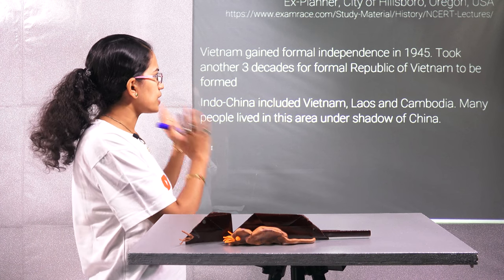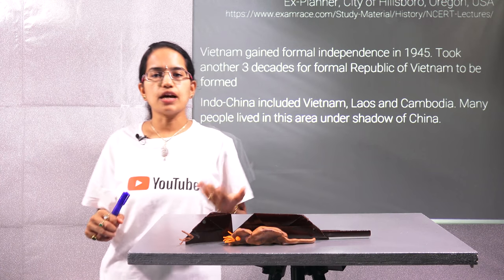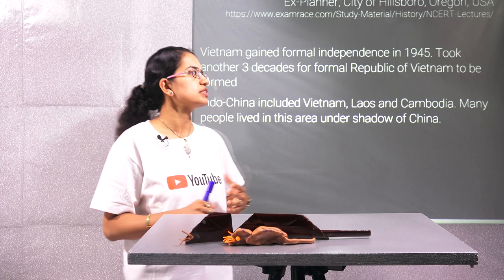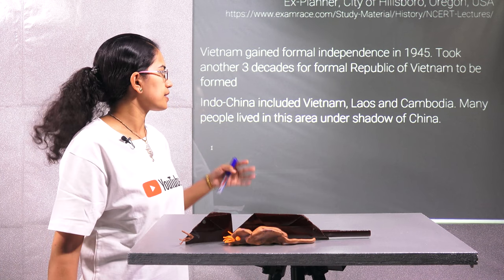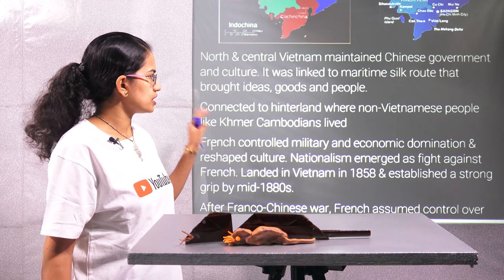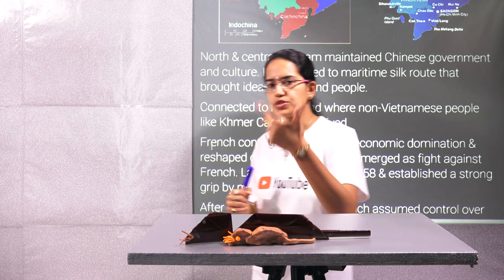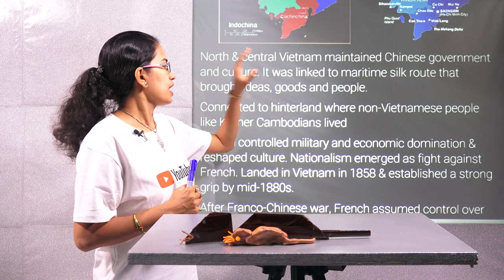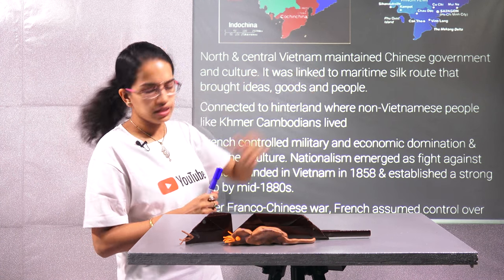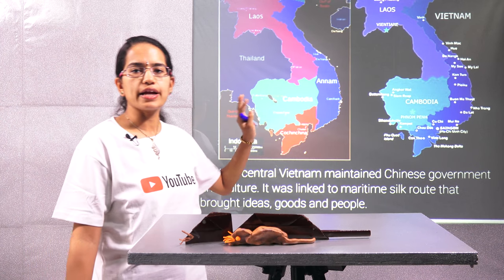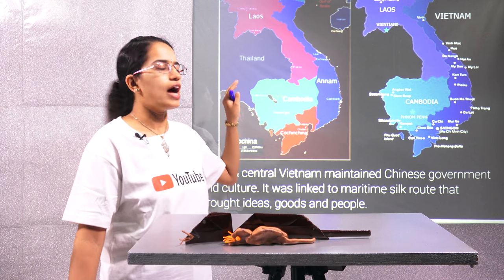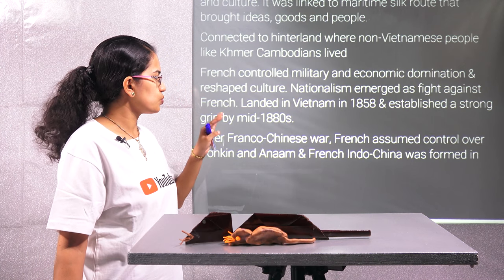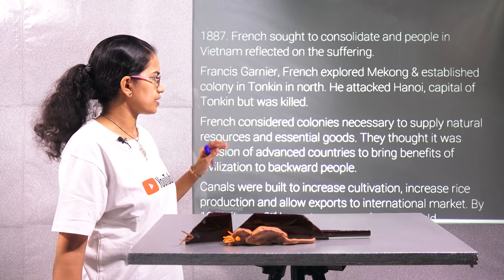Vietnam basically gained its independence in 1945, but even after that it took nearly three decades for France to become a kind of republic. The northern and central portions were captured from China by France — that was the region of Tonkin and Annam. The hinterlands of those regions lying close to Cambodia were occupied by Khmer Cambodians, who were the natives who lived there.